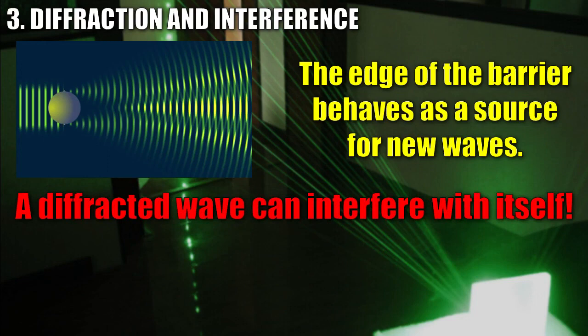We see, just as before, a shadow region behind the barrier. Notice that as they spread out, the wave from the top of the barrier and the bottom of the barrier actually interfere with each other. So, by diffraction, a wave can actually interfere with itself.